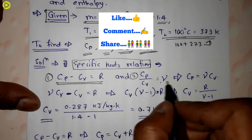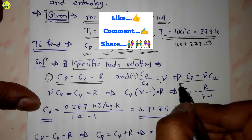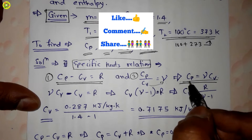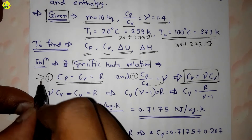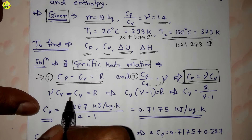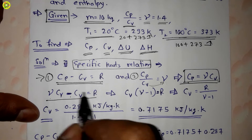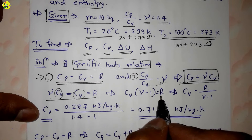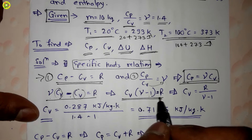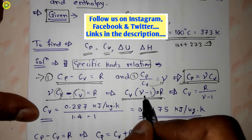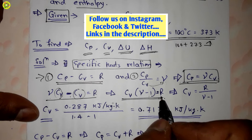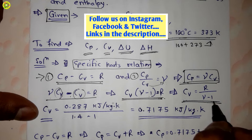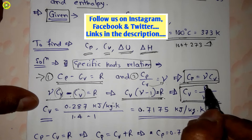From the second relation, cp equals gamma times cv. Substituting this into the first equation: gamma·cv minus cv equals R. Taking cv outside the bracket: cv times (gamma minus 1) equals R. Therefore, cv equals R divided by (gamma minus 1).